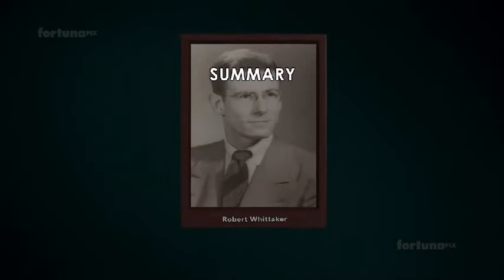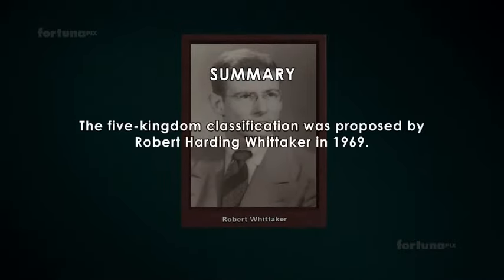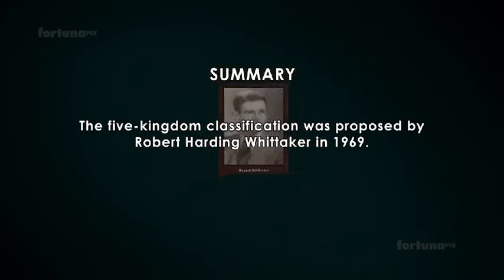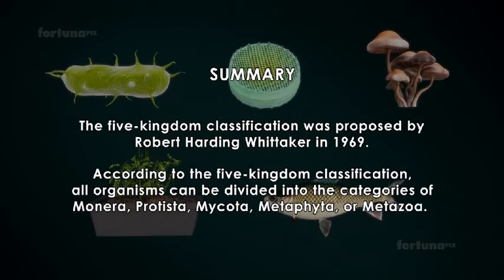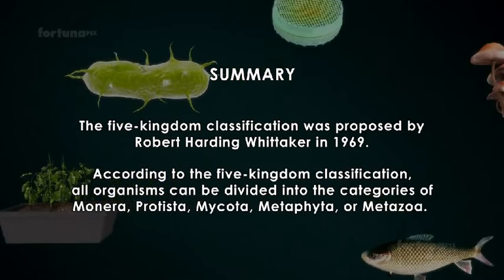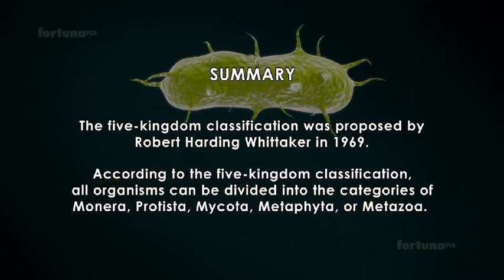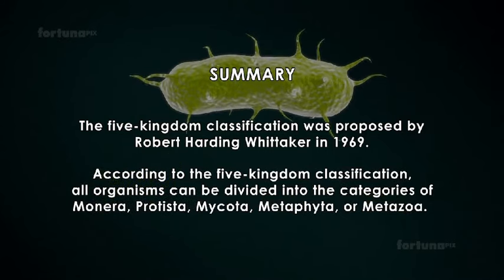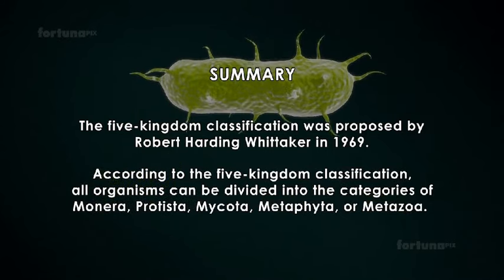Summary: The Five Kingdom Classification was proposed by Robert Harding Whittaker in 1969. According to the Five Kingdom Classification, all organisms can be divided into the categories of Monera, Protista, Mycota, Metaphyta, or Metazoa.